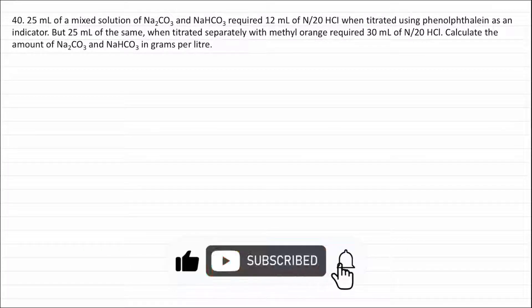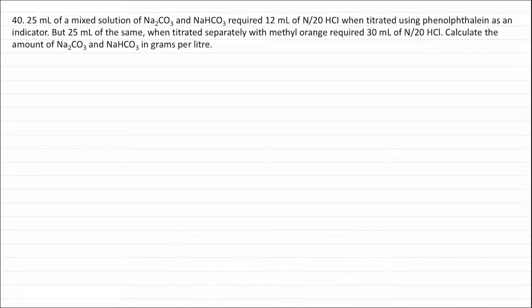Question 40. 25 ml of a mixed solution of sodium carbonate and NaHCO₃ required 12 ml of N/20 HCl when titrated using phenolphthalein as an indicator, but 25 ml of the same when titrated separately with methyl orange required 30 ml of N/20 HCl. Calculate the amount of Na₂CO₃ and NaHCO₃ in grams per liter.